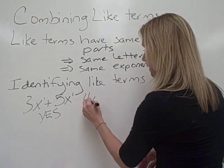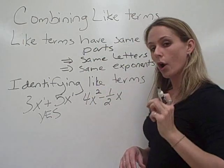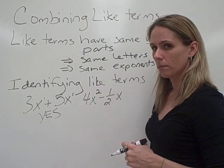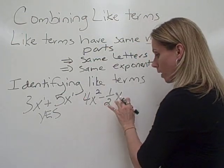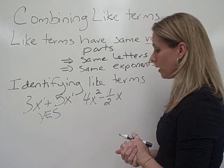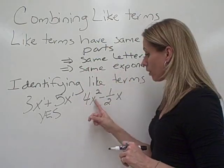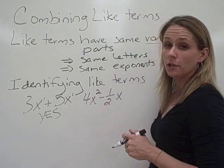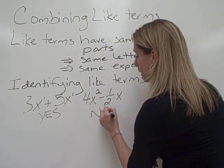Now, if I gave you 4x squared minus 1 half x, are those like terms or not? What do you think? Okay, so here we have an x. We also have x's here. But we have to have the same exponents. Here we have x squared, here we just have x. So these are not like terms, and they won't be able to be combined. So we say, no.